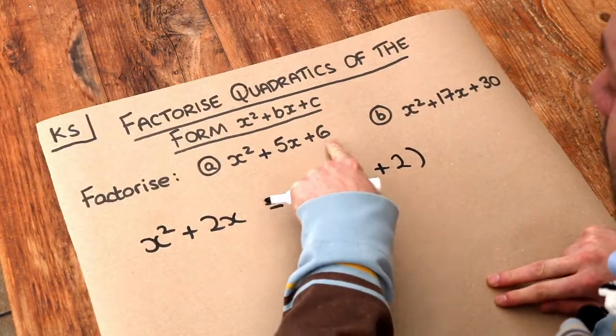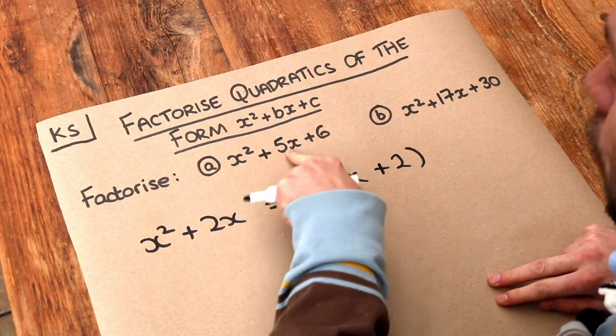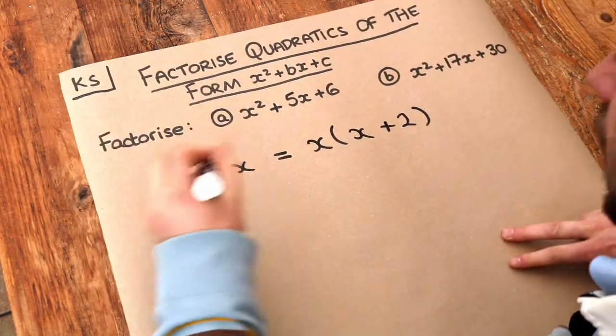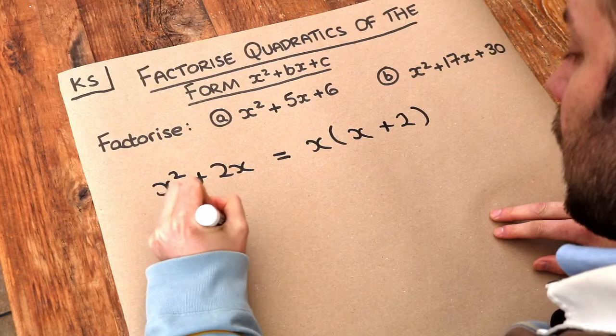But with this example x squared plus 5x plus 6, there's not a common factor to all of them so we can't use the same strategy. But the strategy we can use is this.